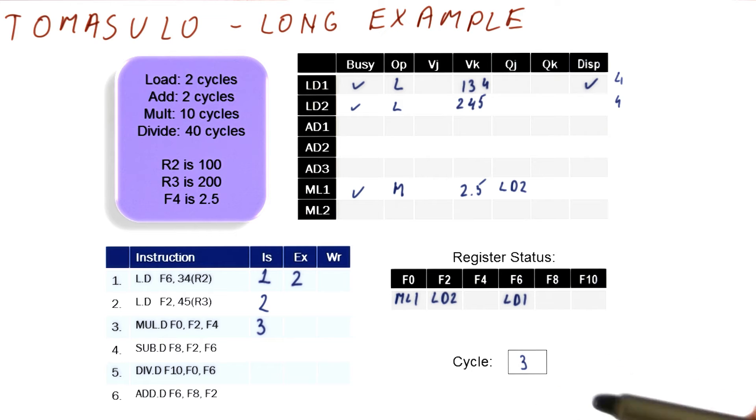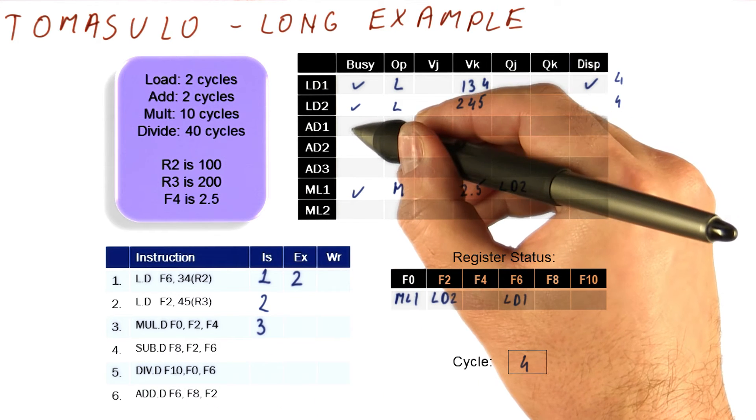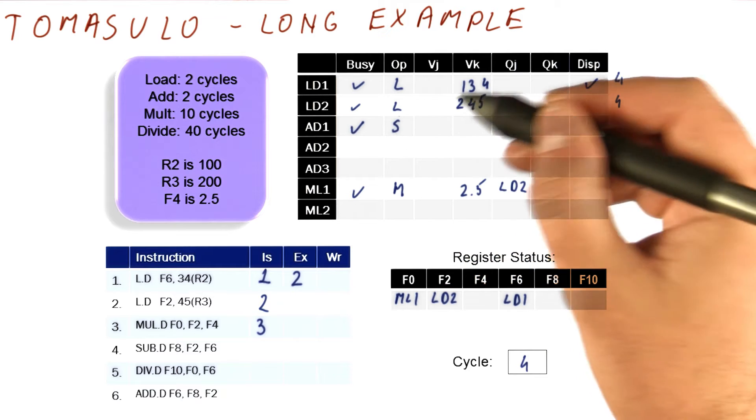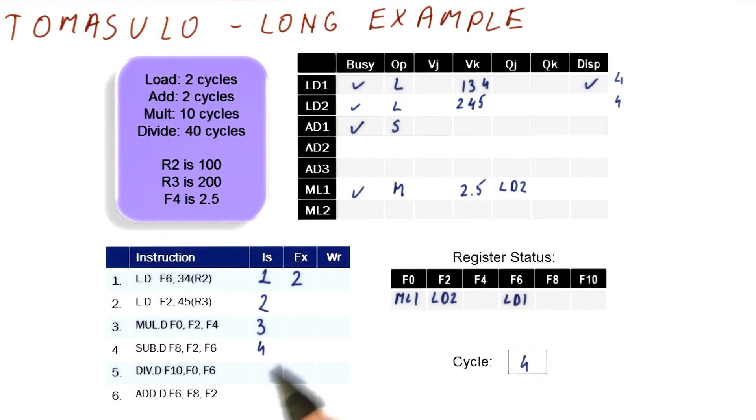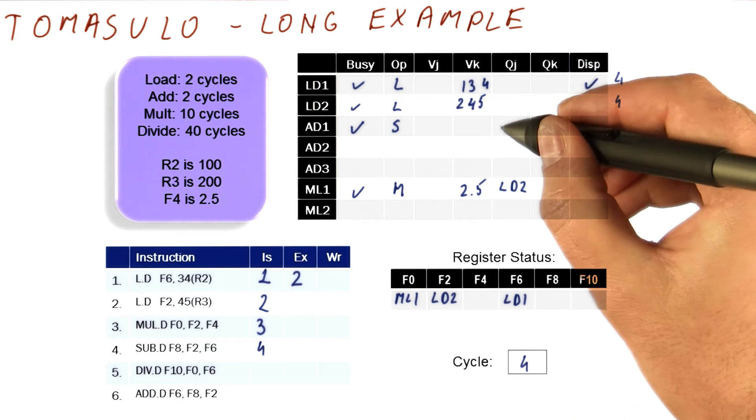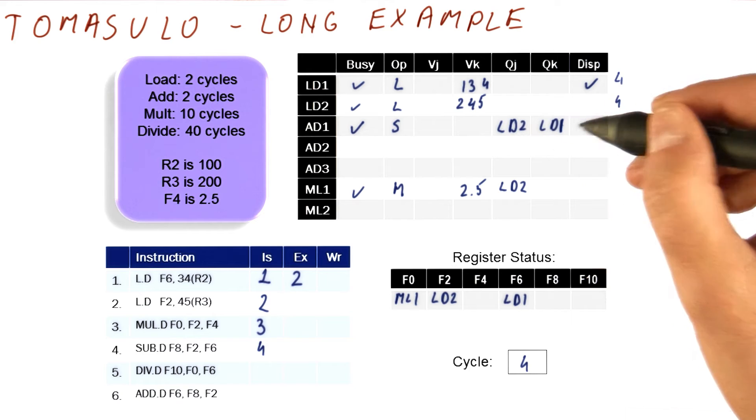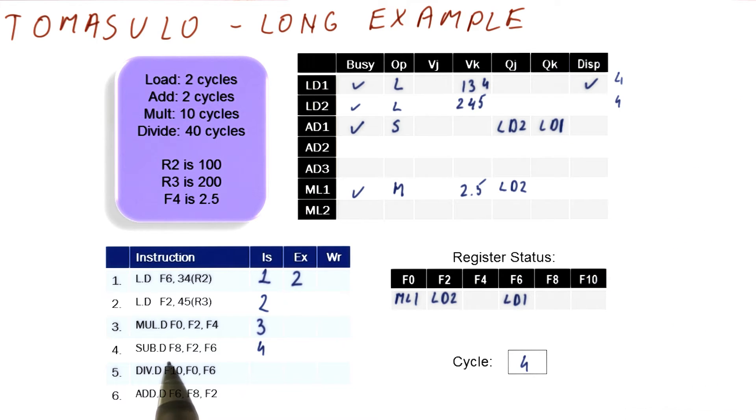So now we go to cycle four. In cycle four, we will try to issue the next instruction, which is this subtract. It's going to use an adder unit. So this is just to mark it as a subtract. We're going to issue it in this cycle. F2 and F6 are LD2 and LD1. So this one actually is waiting like this. And we also have to mark the F8 as renamed to AD1. So this completes the issuing in this cycle.